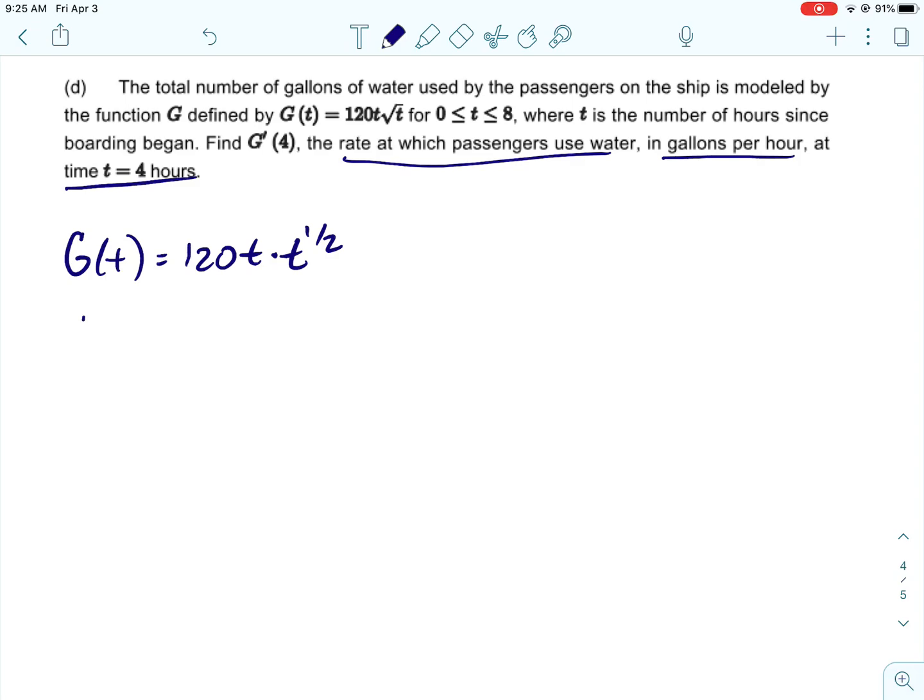So before I find g prime, I am going to rewrite g in a way that's going to make it easier for us to find it. So I would say that the square root of t is t to the one half. And then I would go ahead and multiply those together by adding the exponents. So when we do that, we don't have to worry about doing the product rule, which I know the product rule isn't difficult, but this is going to be so much easier. Because to find g prime, we just have to do the power rule.